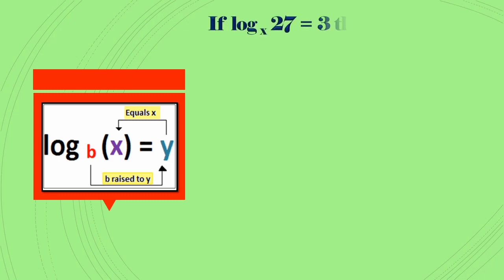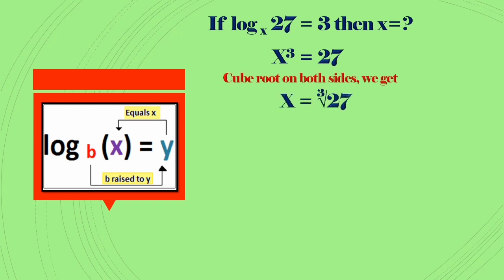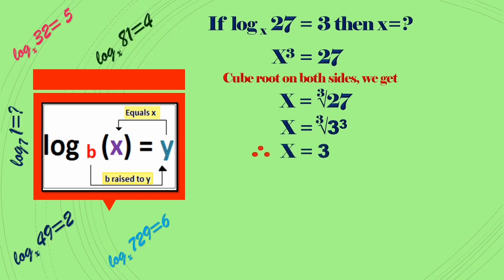See another example: if logₓ27 = 3, then what is x? The exponential form is x^3 = 27. Taking cube root on both sides, we get cube root of 27, that is cube root of 3^3. So cube root and cube get cancelled, then x = 3.